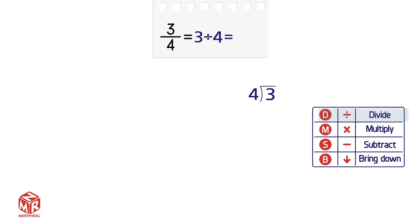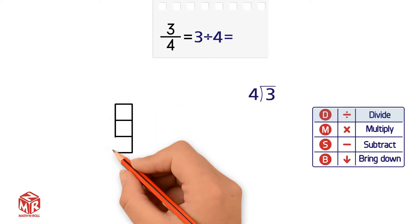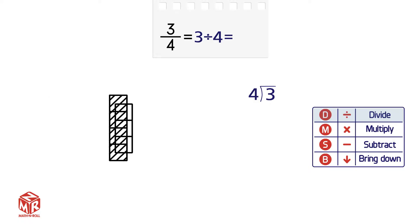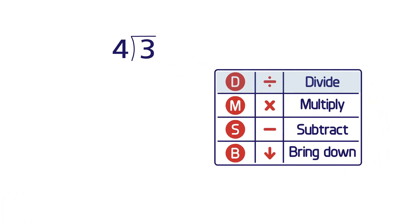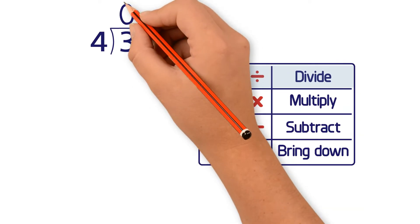Step 1: Divide. 3 divided by 4 means how many times does 4 go into 3? None. So we put a 0 above the 3.